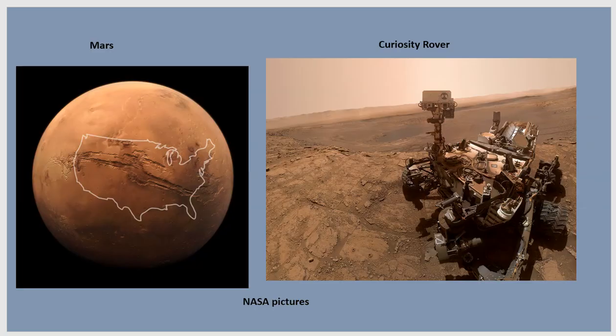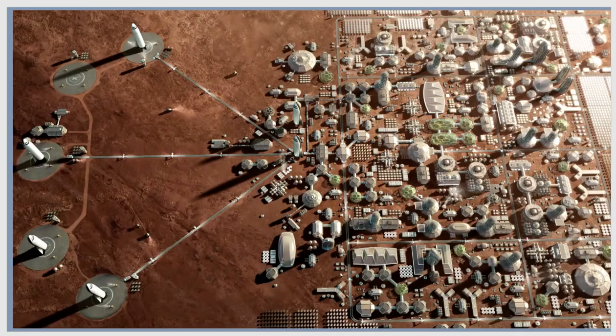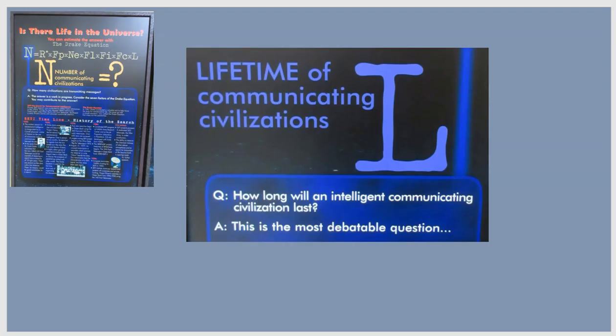One way around that would be to colonize some other world, like Mars for example. We've sent machines there. It's only a matter of time until we send people there. Perhaps in 100 years we'll have colonies on Mars. Maybe that will give us some insurance in case the Earth has some devastating catastrophe, that our civilization can continue. But that L term is a big unknown. How long can a technological civilization last?